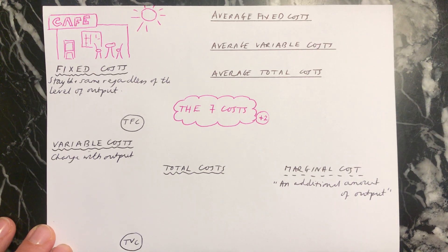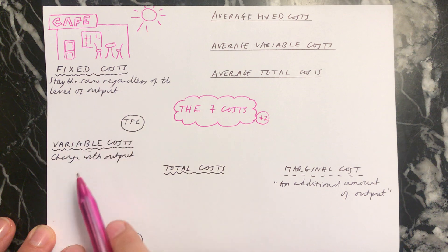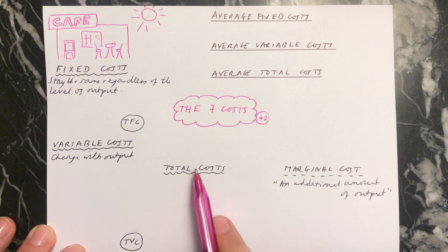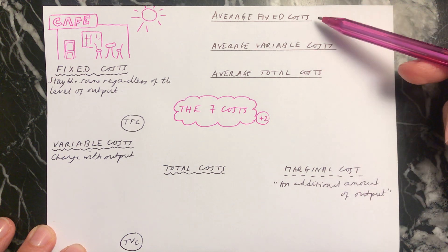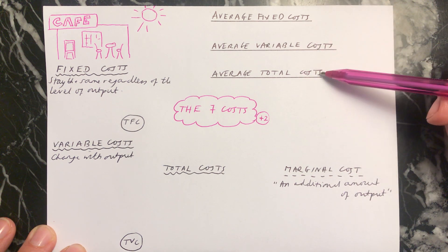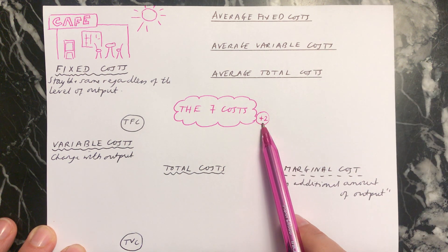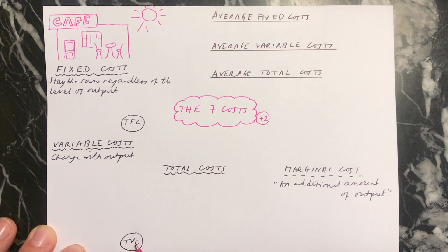Hi everybody. I'm going to explain the seven costs which are incurred by all businesses. These are the main seven ones: fixed costs, variable costs, total costs, marginal cost, average fixed costs, average variable costs, and average total costs. There are also two extra ones you can add in, which are total fixed costs and total variable costs.